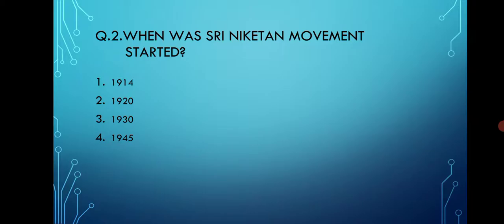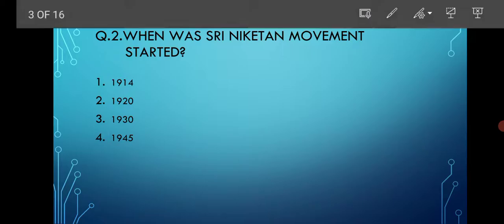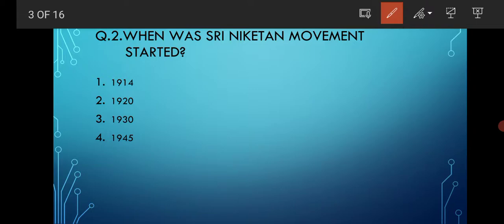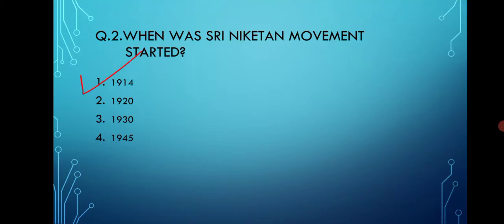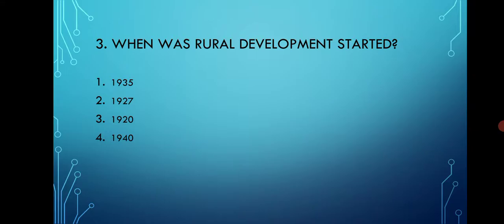When was the Sriniketan Movement started? Options are 1914, 1920, 1930, 1940, and 1945. The correct option is option number one, that is 1914.